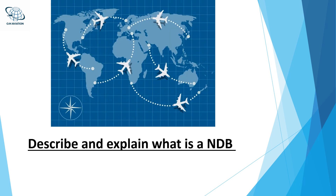NDB: ADF, Automatic Directional Finder, is a device in the airplane that receives the ground station transmissions. The ground station, NDB, non-directional beacon, transmits radio waves in all directions. The transmissions are received by the ADF receiver in the airplane.